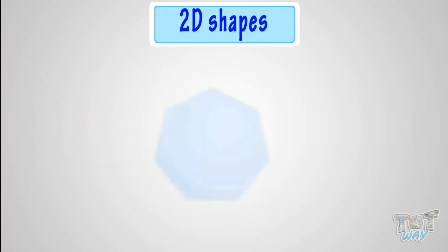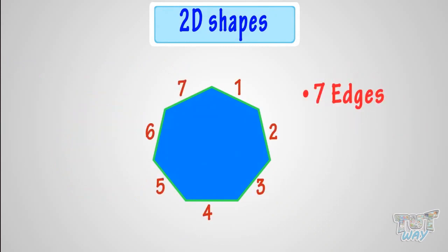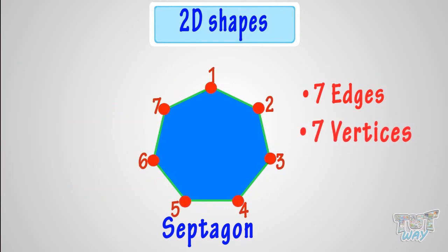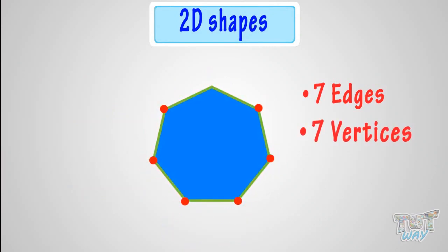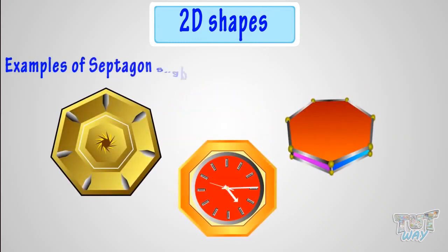This is a polygon that has seven straight sides, and is called a septagon. It has seven vertices and seven edges. These are some of the septagon-shaped things.